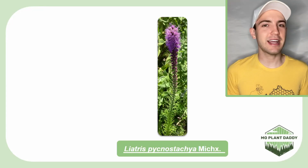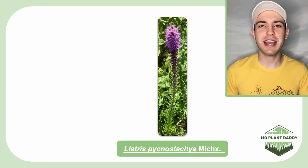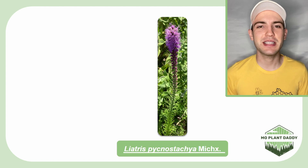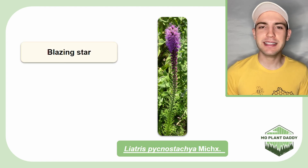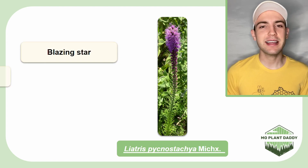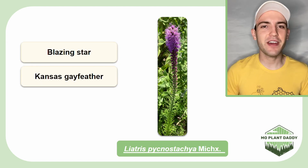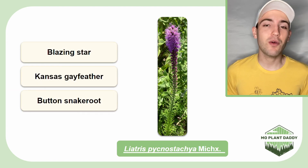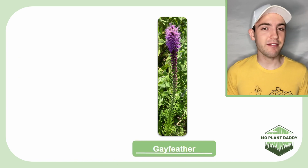Hi everyone, today we're going to be learning about Liatris pycnostachya, otherwise known as prairie blazing star, Kansas gay feather, button snake root, or just gay feather.